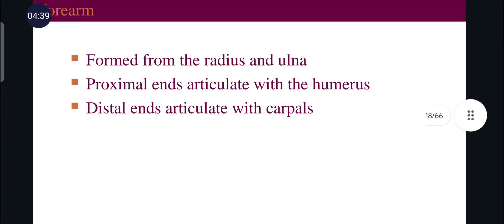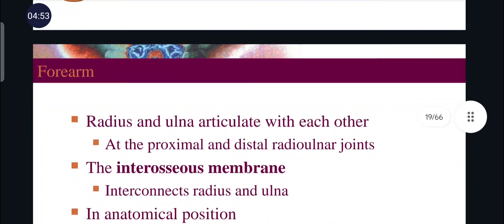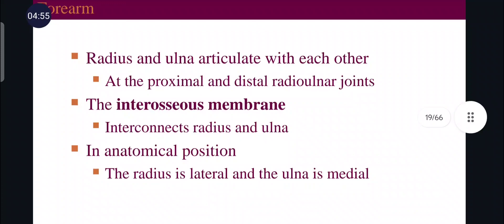The bones of the forearm are the radius and ulna. Their proximal ends articulate with the humerus, and their distal ends articulate with the carpals — the bones of the wrist. The radius and ulna articulate with each other at the proximal and distal radioulnar joints, connected by the interosseous membrane. In anatomical position, the radius is lateral and the ulna is medial.